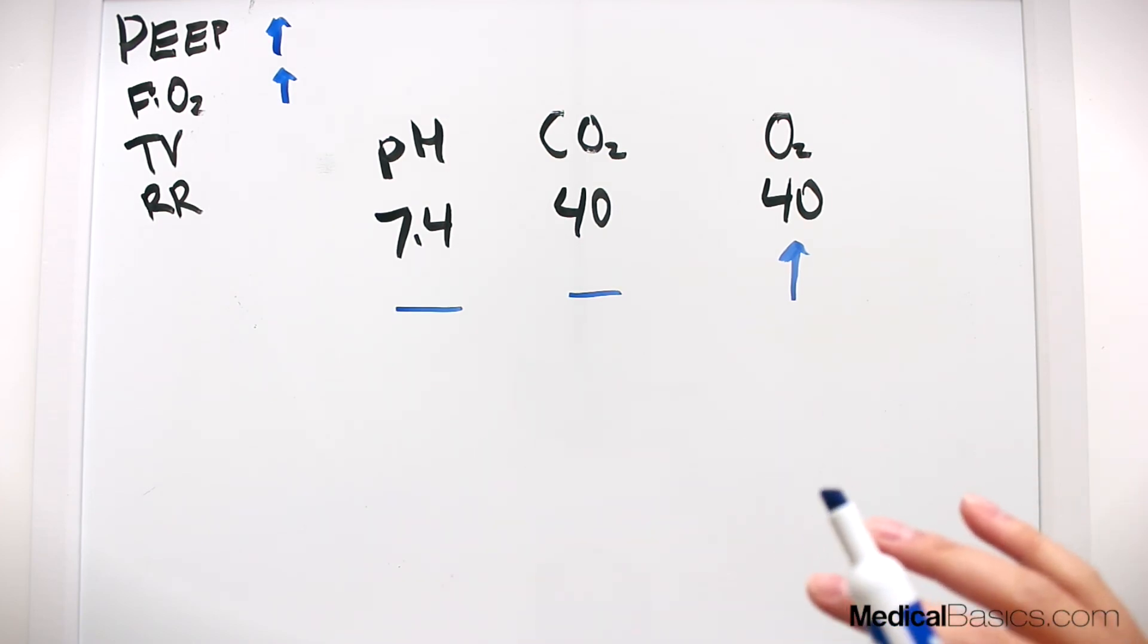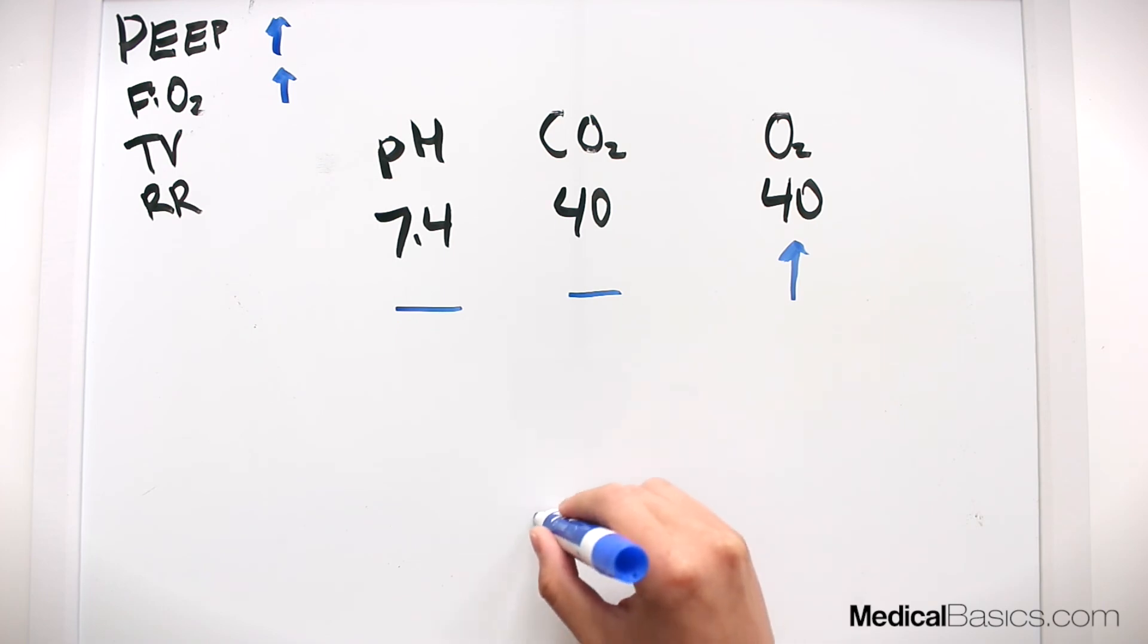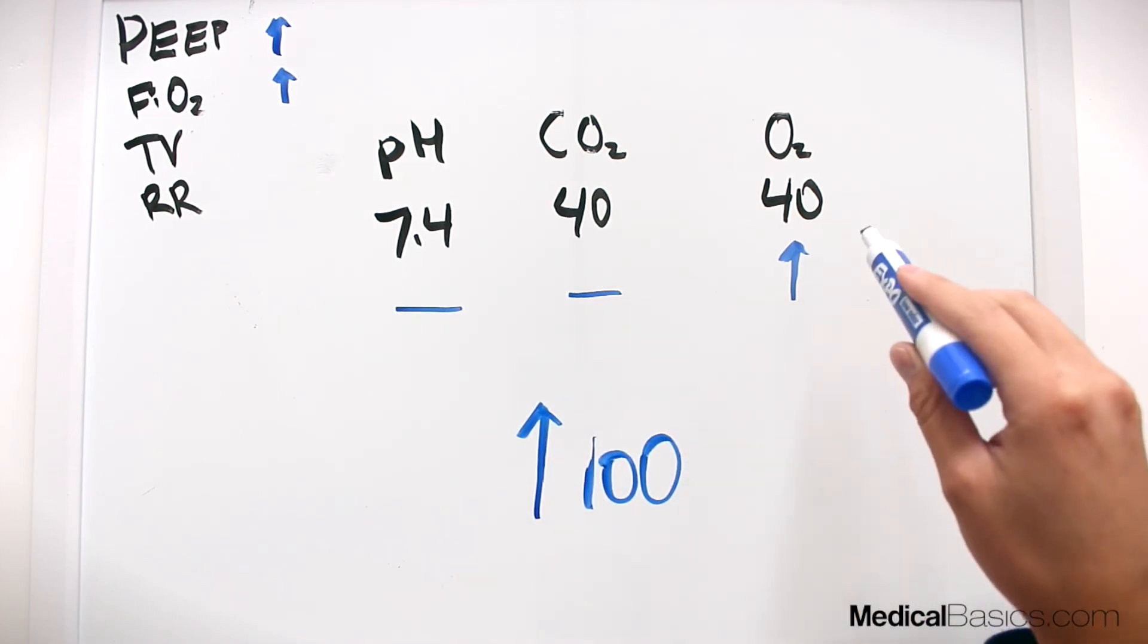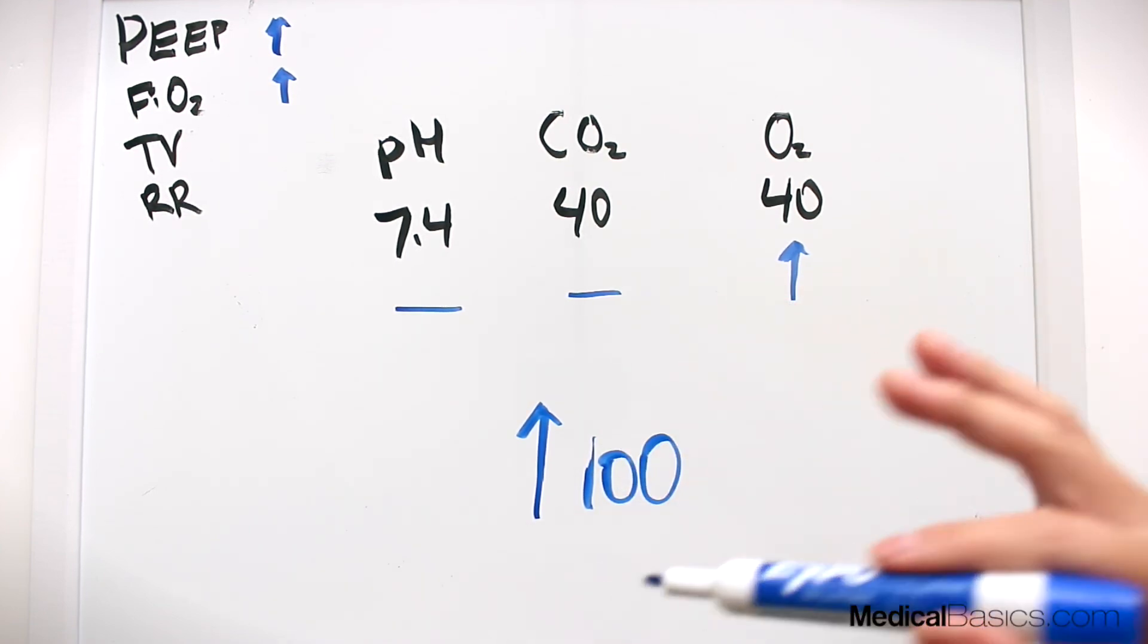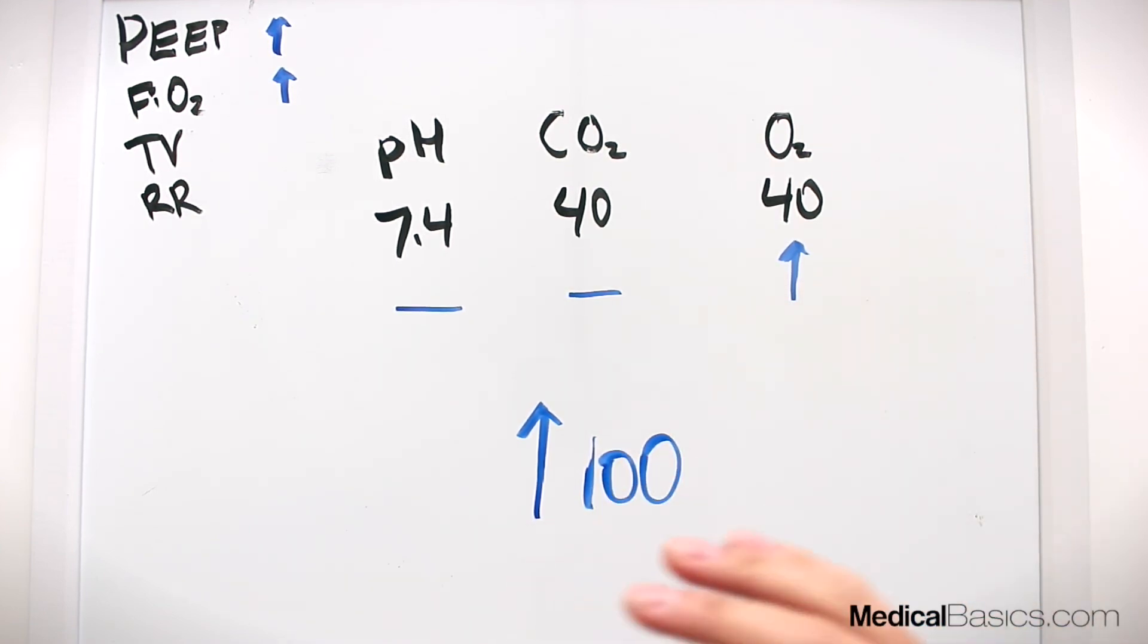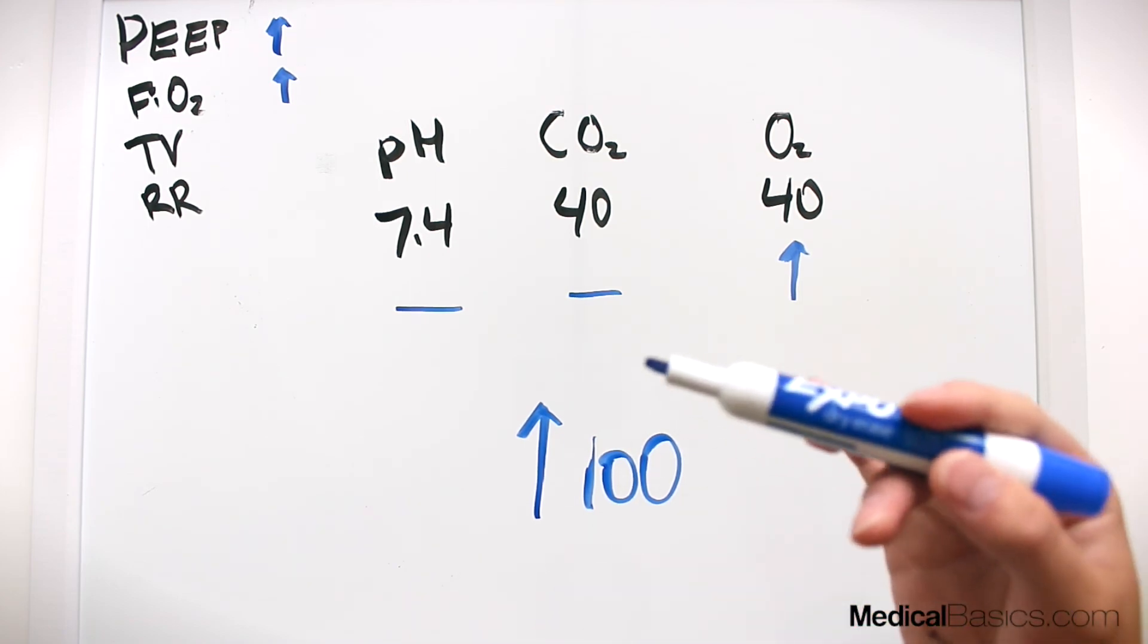Because a lot of times people would think, well, can I just increase FiO2 to 100 and drive up the O2? Well, actually that's not going to be the best way to do that. You're going to want to increase FiO2 as well as PEEP. It's not going to be an all or none, just like respiration and tidal volume. You don't want to just increase the respirations to 80 and then keep the tidal volume the same. You want to kind of drive both of them up at the same time.